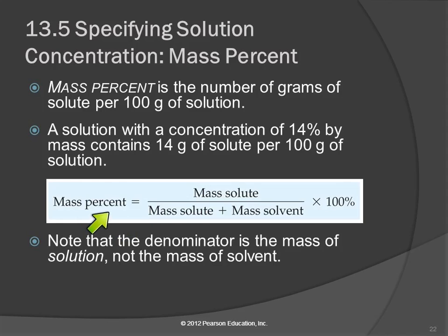So here's the equation. It's the mass of the solute divided by the mass of the solute plus the mass of the solvent. Remember, there's at least two parts to a solution: a solvent and a solute. And so what we have down here is the mass of the whole solution, and that's really important.